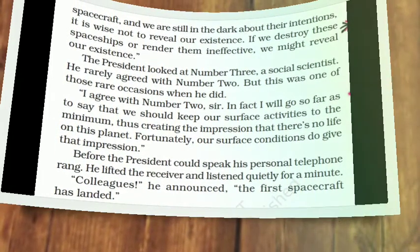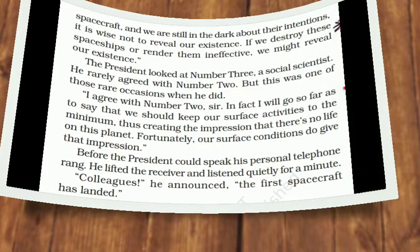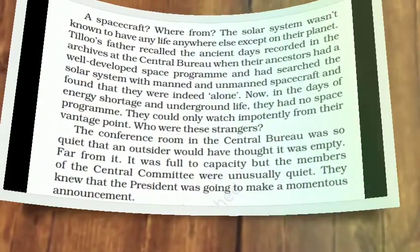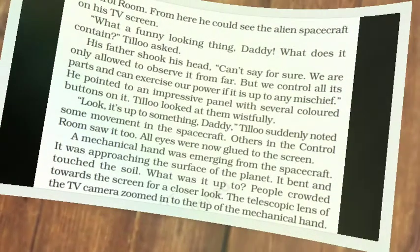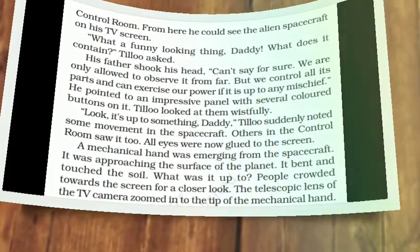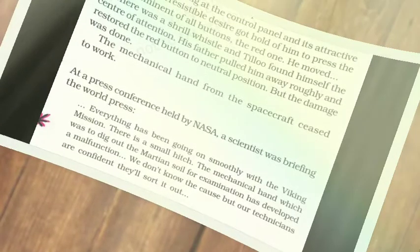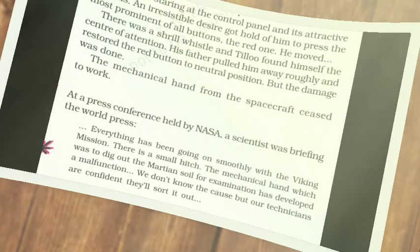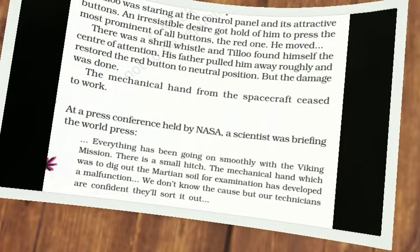In the meantime, the president got a message that the first aircraft had landed. The next day, Tillu's father took him to the control room. He was very excited. He could watch the alien spacecraft on a TV screen. The TV screen showed a mechanical hand emerging from the spacecraft. Tillu was so excited that he pressed an important red button on the panel. The mechanical hand from the spacecraft ceased to work. The mechanical hand was trying to collect samples of soil from the surface of Mars.